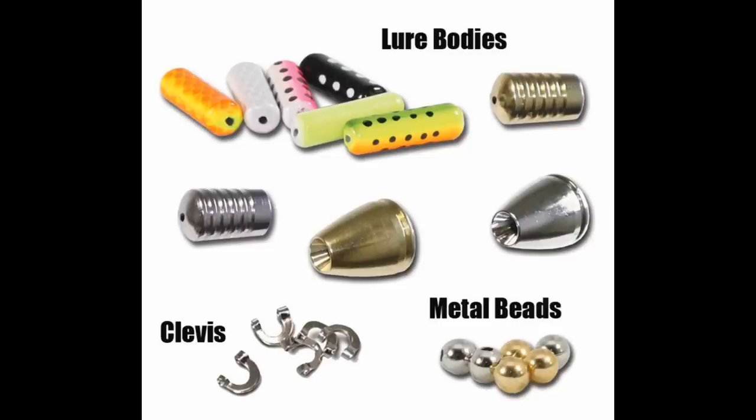Lure bodies are available in a variety of styles. A clevis is used to attach the spinner blade to the wire shaft. Metal beads are installed on both ends of a clevis.